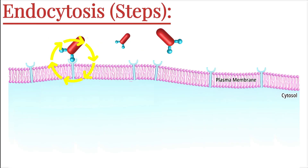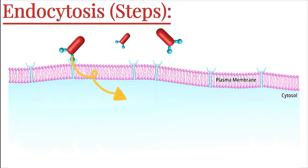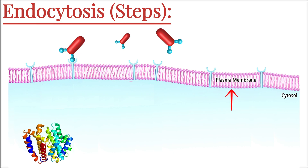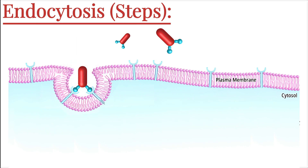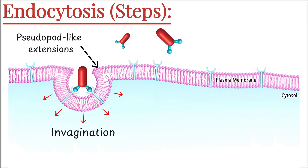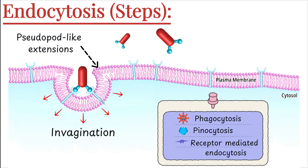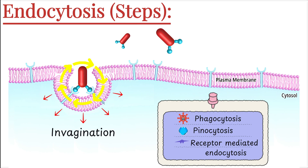Once the ligand binds to the receptor proteins on the cell surface, it triggers a signal inside the cell — a kind of molecular green light that tells the cell it's time to bring the material in. This signal activates certain proteins beneath the membrane, like clathrin in receptor-mediated endocytosis, or rearranges the actin cytoskeleton in phagocytosis. These internal changes guide the plasma membrane to start bending inward. This bending inward is called invagination. The membrane begins to fold around the particle, forming a pit-like depression or pseudopod-like extensions, depending on the type of endocytosis.